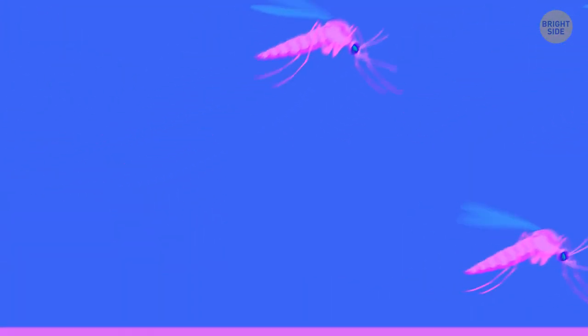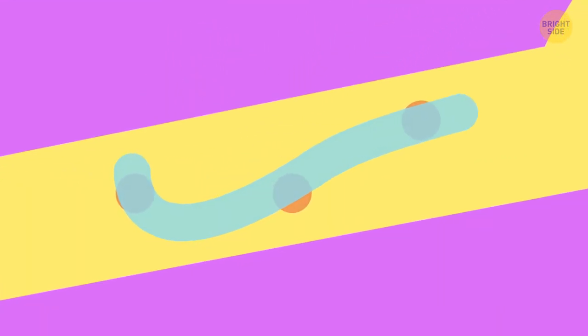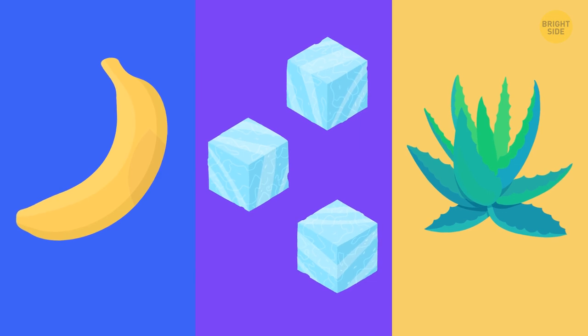After a rendezvous with bugs and mosquitoes, put some toothpaste on the affected areas on your skin. Menthol will cool down those spots and reduce all the unpleasant sensations. A banana peel, some ice, or aloe vera will also work.